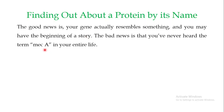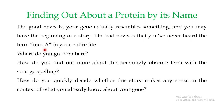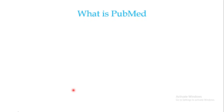You may have the beginning of a story, but the bad news is that you have never heard the term MechA in your entire life. So how do you deal with this term MechA and get useful information about it? Where do you go from here? How do you find out more about this seemingly obscure term with the strange spelling, and how do you quickly decide whether this story makes sense in the context of what you already know about your gene?